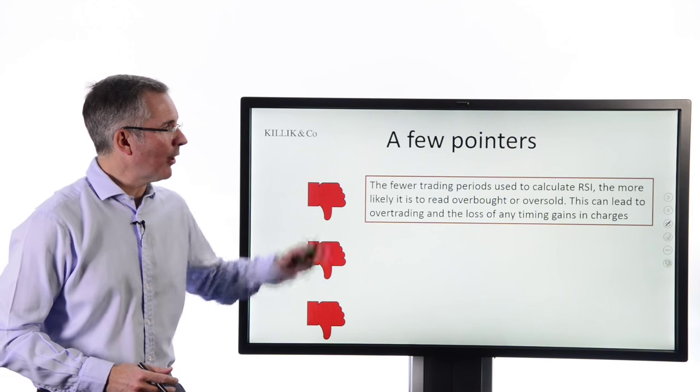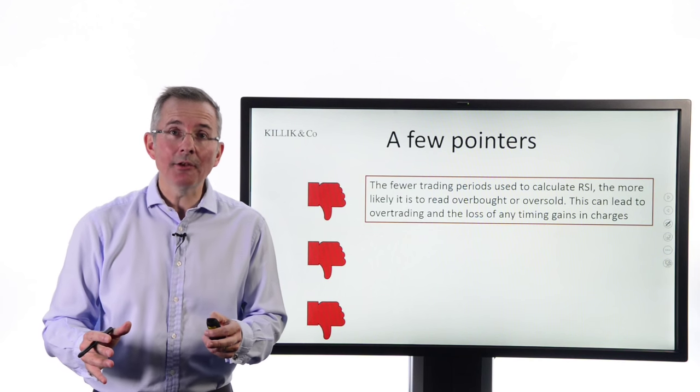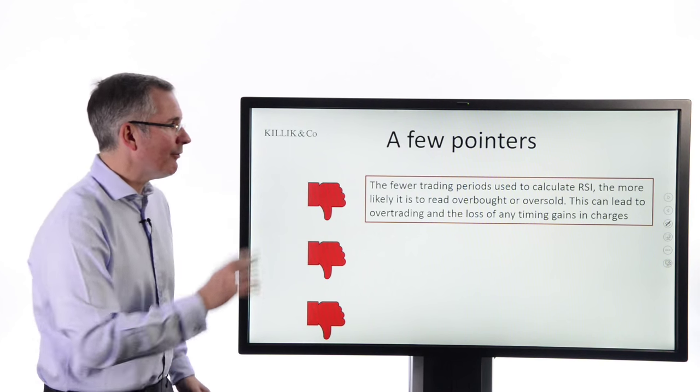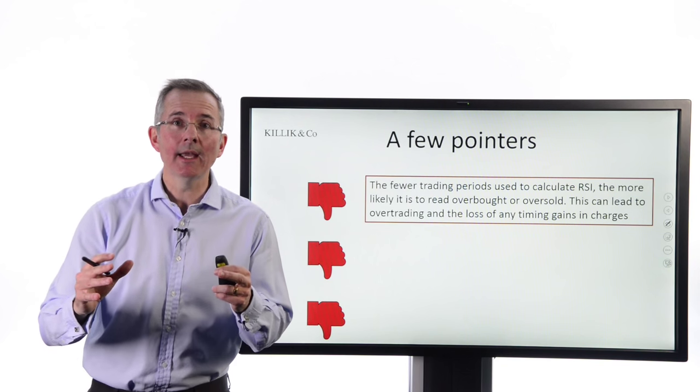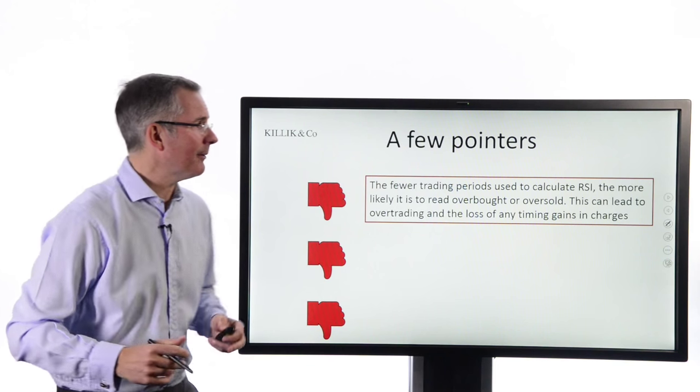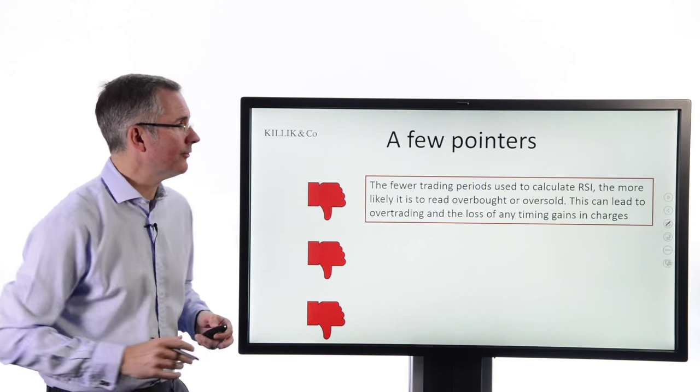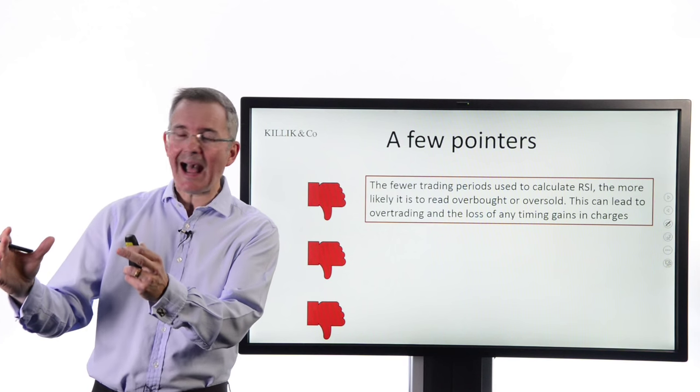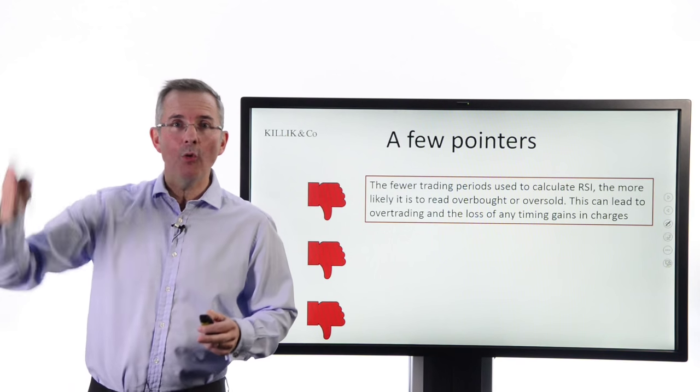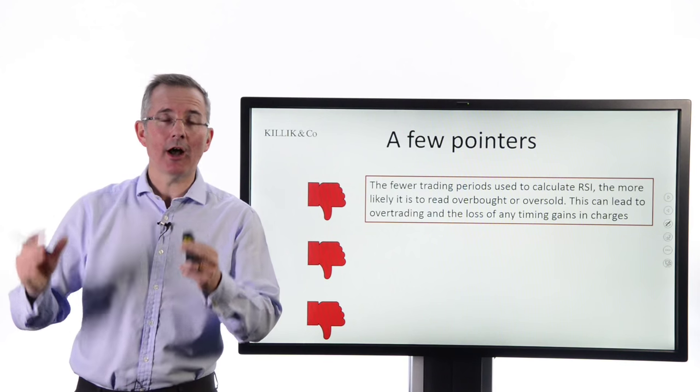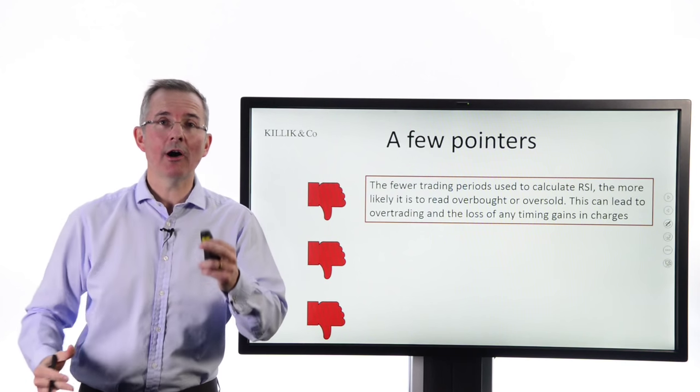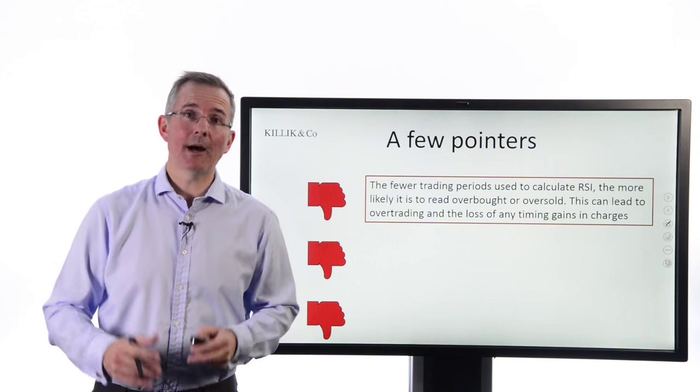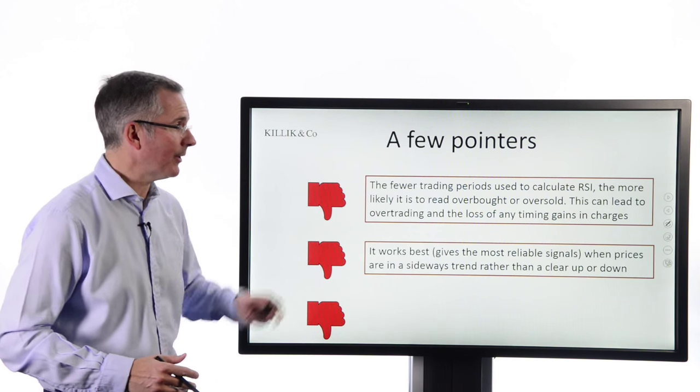It's not perfect. A few pointers. First of all, the calculation. You need to get under the bonnet if you're going to use this thing regularly. Basically, the fewer trading periods that are used to calculate the RSI, the more it's likely to read overbought and oversold. In other words, use fewer trading periods to look back and get a feeling for the RSI. It will be more volatile. You have to be careful because if it's volatile, you'll be in and out of stocks the whole time. And any gains you make from timing stuff right short term will be eaten up by charges. So you've got to be a little bit careful. You need to understand how it's done.